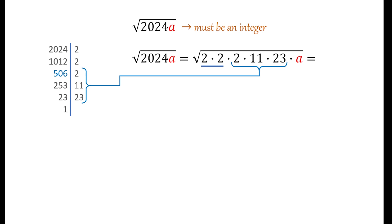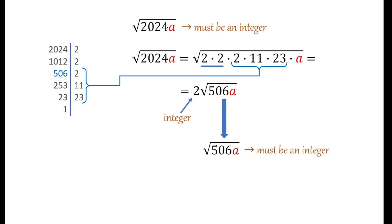This means we can write √(2024a) as 2√(506a). Since 2 is an integer and the whole expression must be an integer, √(506a) must be an integer. This tells us that a must be written in the form 506x², where x is a non-negative integer.